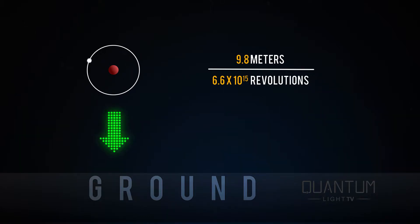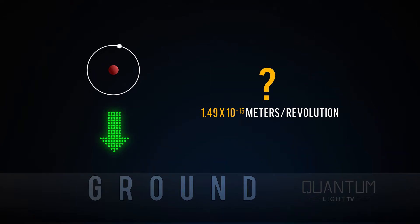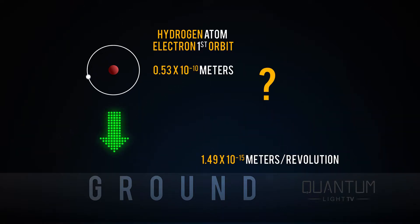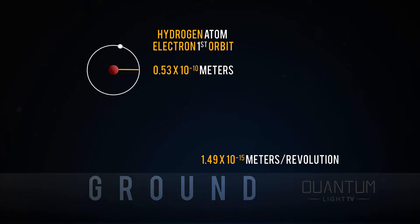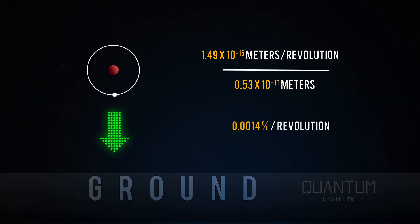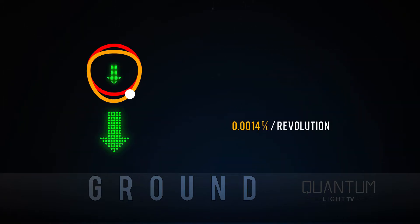That distance is 1.49 times 10 to the negative 15th meters per rotation. But how far is that? Well, the radius of the orbit is incredibly small: 0.53 times 10 to the negative 10 meters. So that I can even begin to understand the relationship between these two very small numbers, I will find the percentage of the radius that the orbit needs to deviate. Running the fraction, I come up with 0.0014% of the radius.